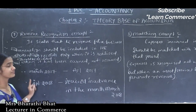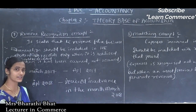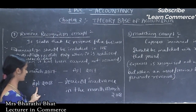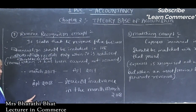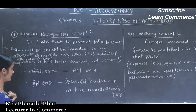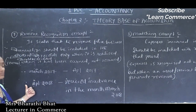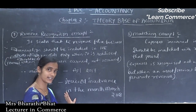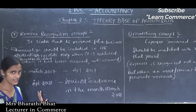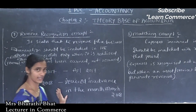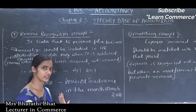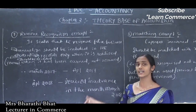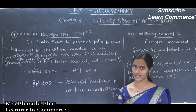Similarly, if income such as interest or rent is received in advance — for example, April 2018 interest or commission is received in March 2018 — that amount is considered as recorded in the next financial year. Up until then, that amount is considered as a liability for the organization and will be taken into the profit and loss account of the relevant financial year.